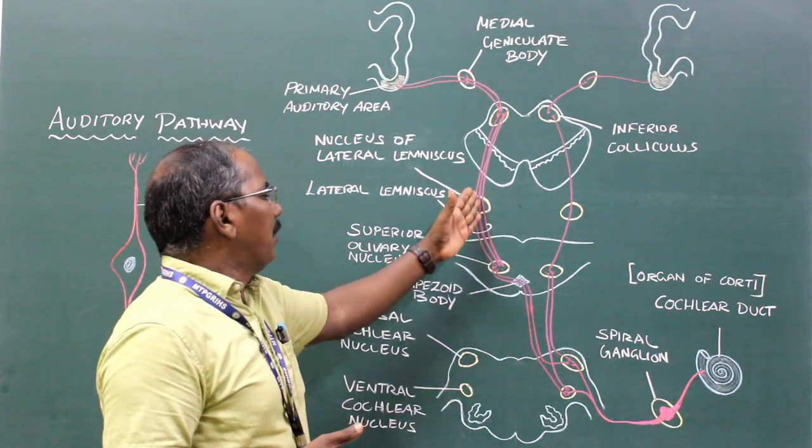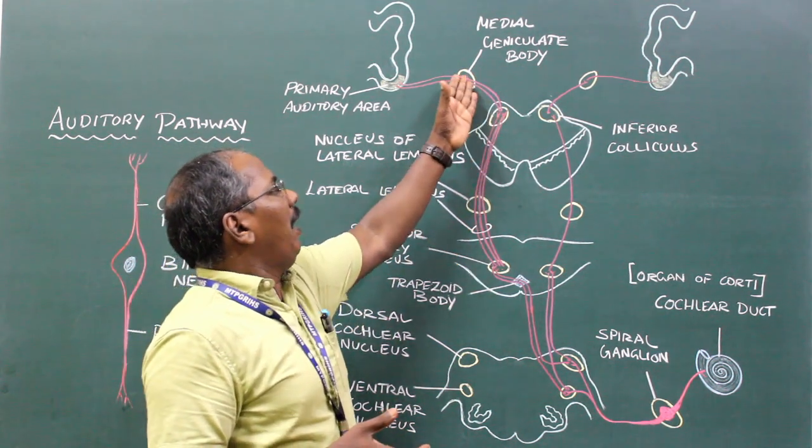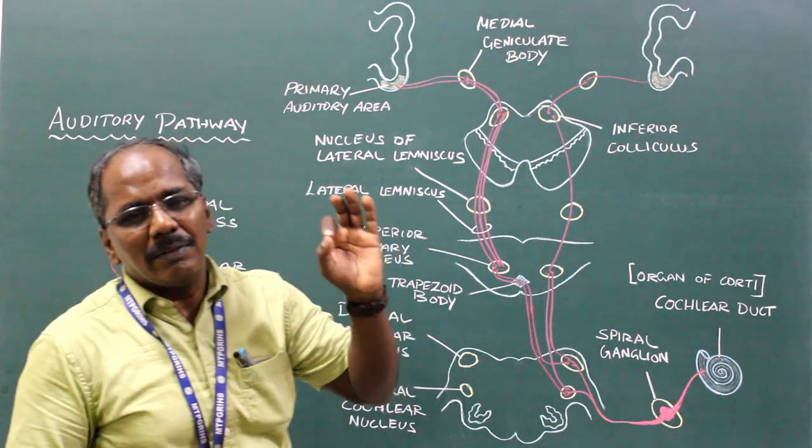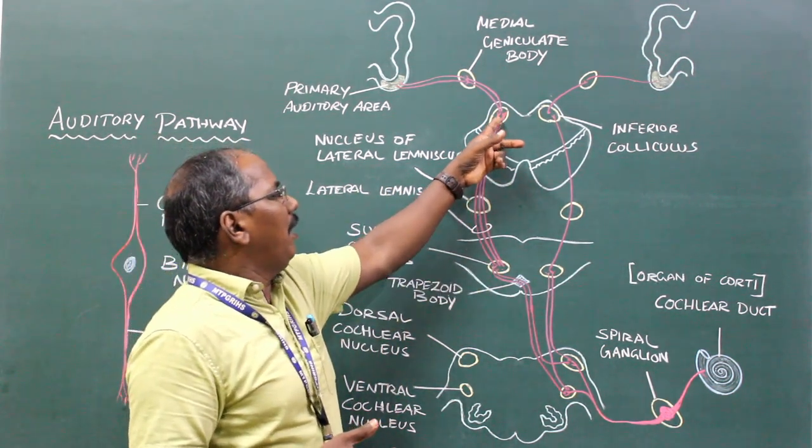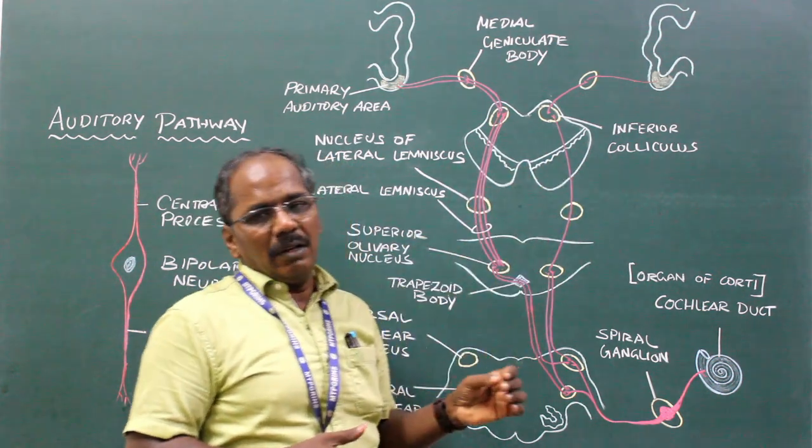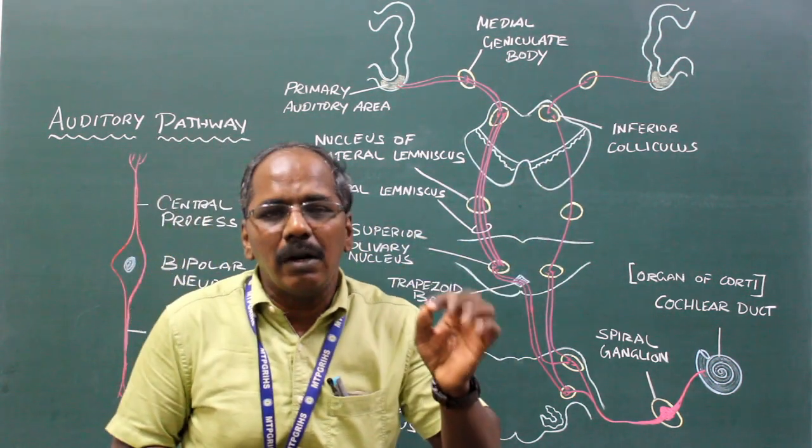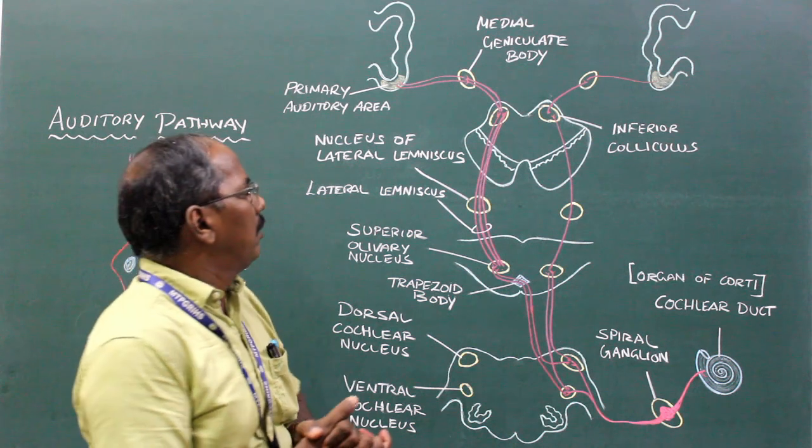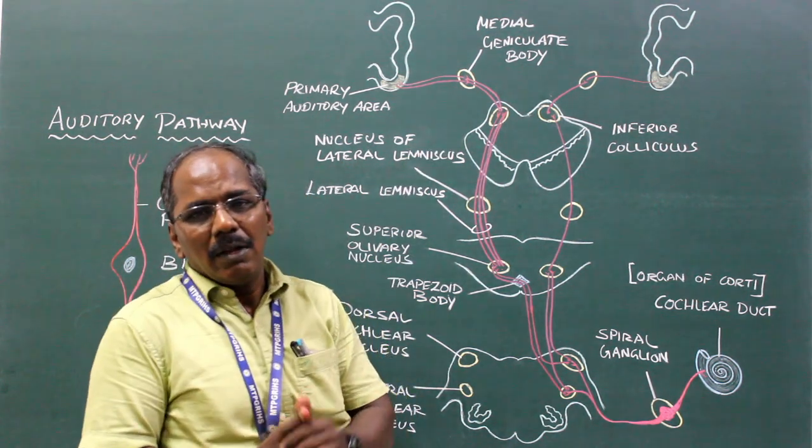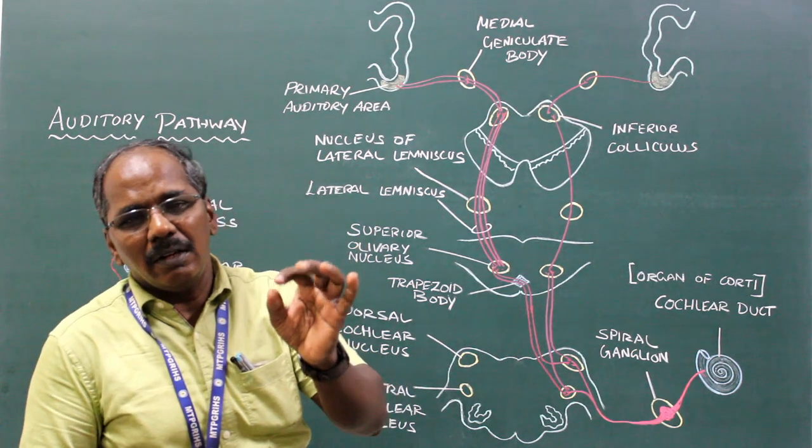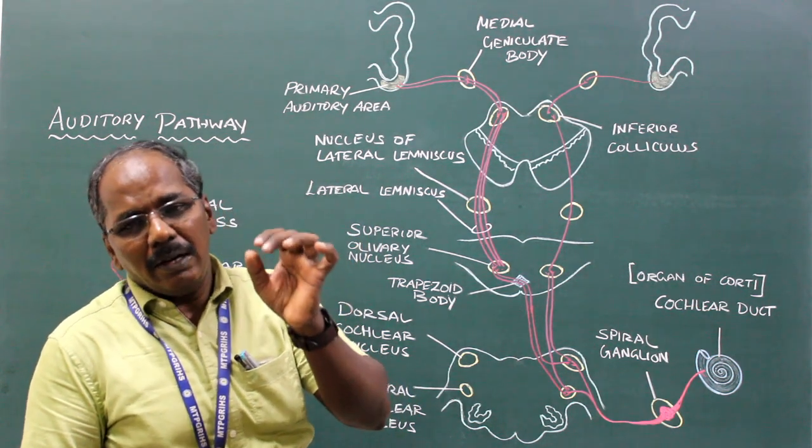Most of the fibers relay in the medial geniculate body, while few fibers relay in the inferior colliculi, the center for auditory reflexes. The medial geniculate body is the main station for the auditory pathway.